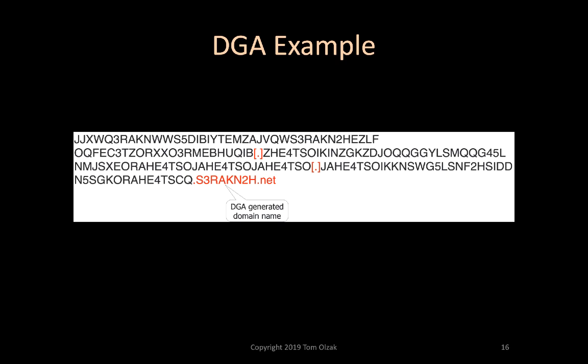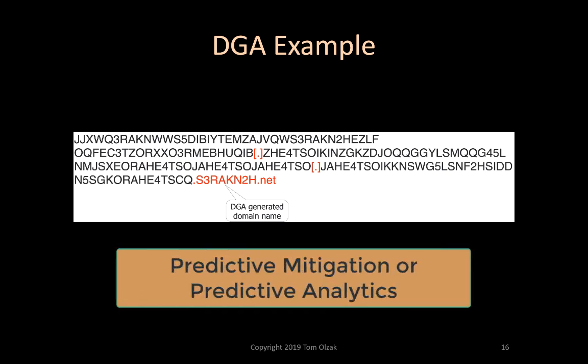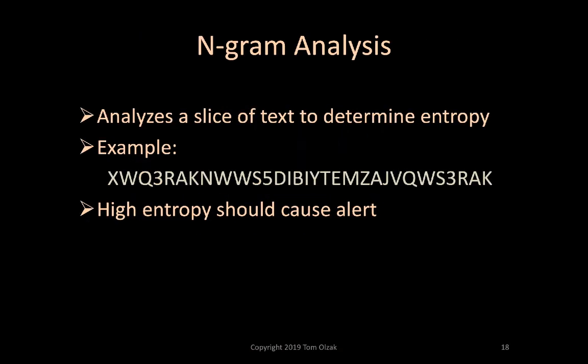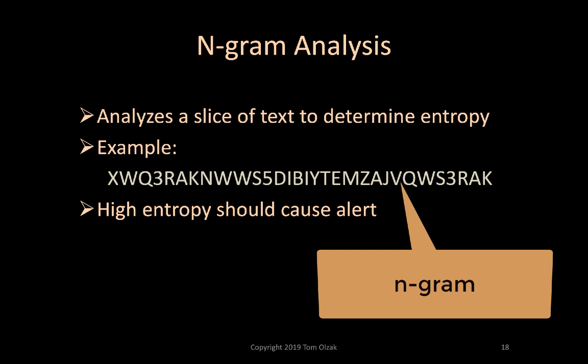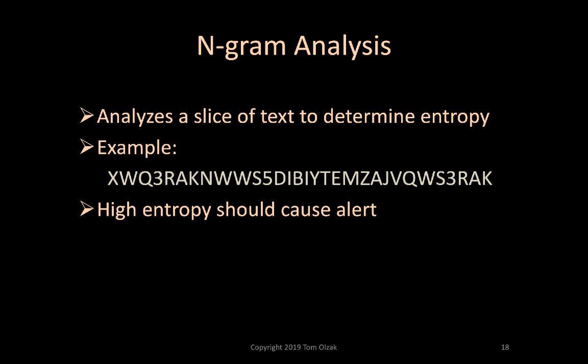One defense against this is predictive mitigation. With predictive mitigation, a security vendor uses known DGA algorithms, associated seeds, and changing values to create sets of possible domain names the MA will use. This is usually coupled with RPZ content. N-gram analysis selects a slice of the queue name and assesses its entropy. This can also be applied to text record text payloads. In this example, I selected an N-gram from the queue name shown previously. We then use machine intelligence or a specially designed algorithm to check the entropy. There are no dictionary or significant occurrences of common character combinations expected in common queue names. Some vendors use machine learning to increase the accuracy of this approach.